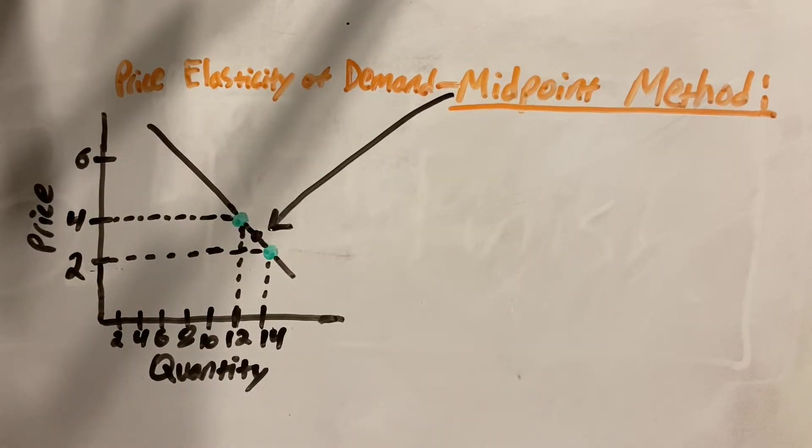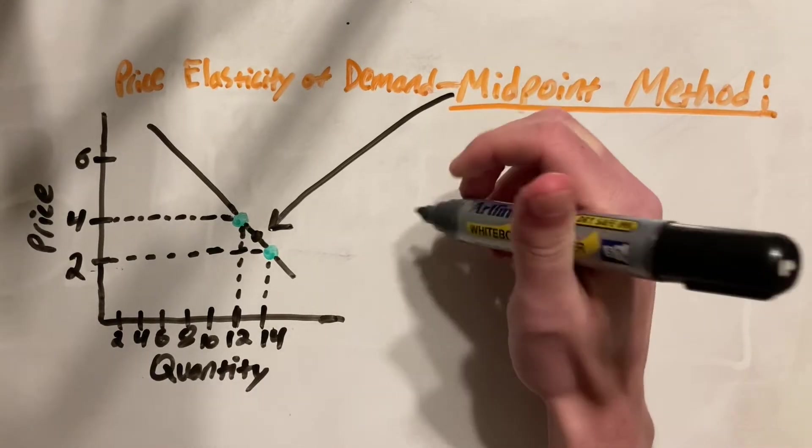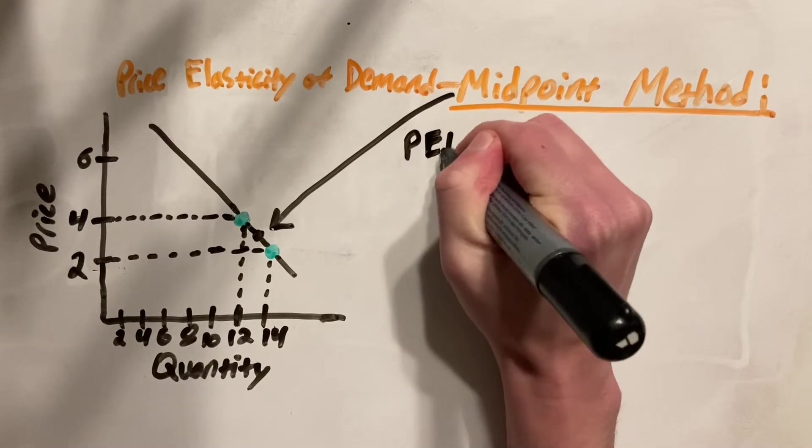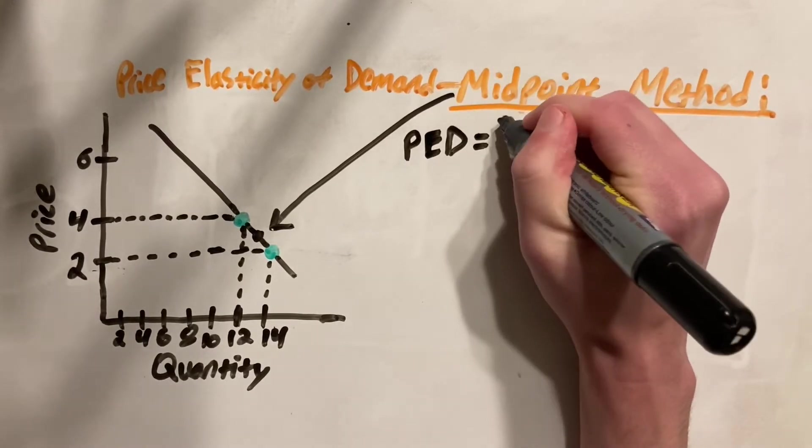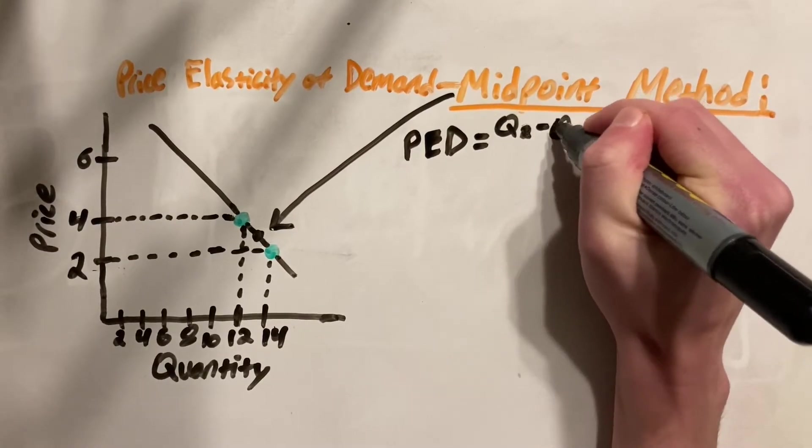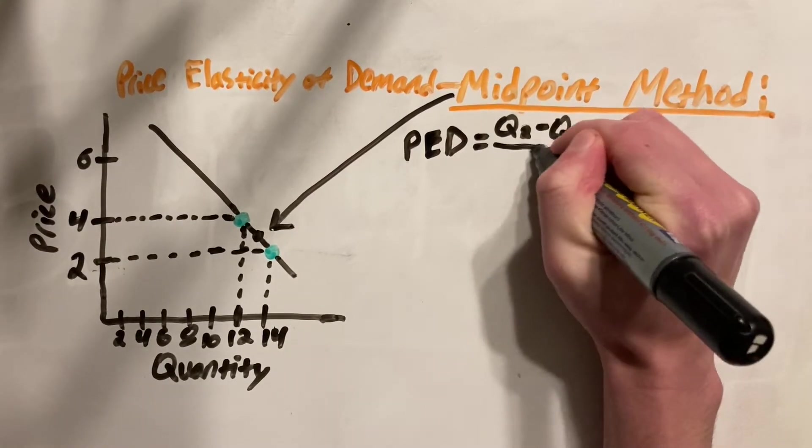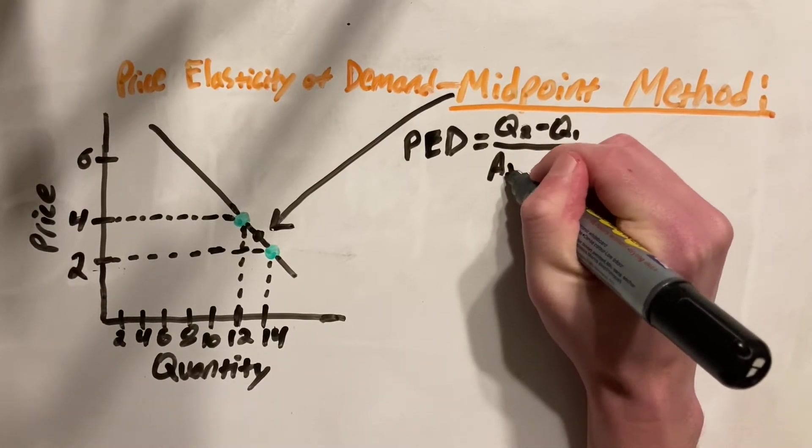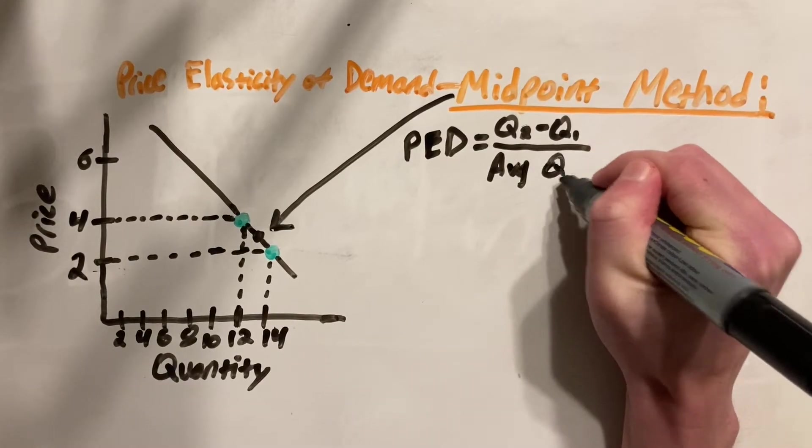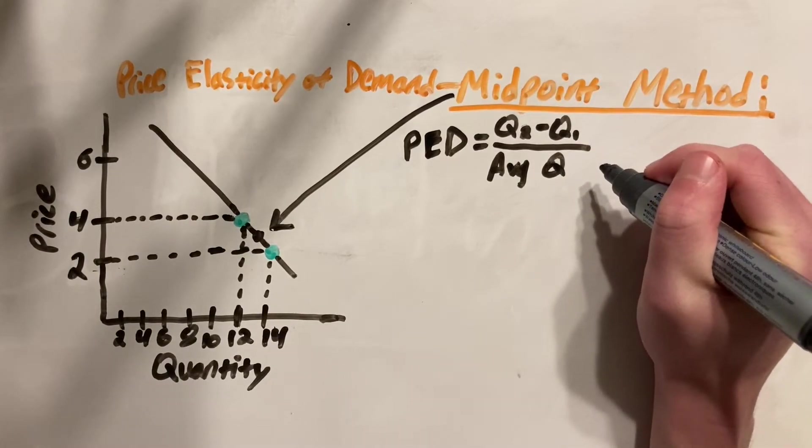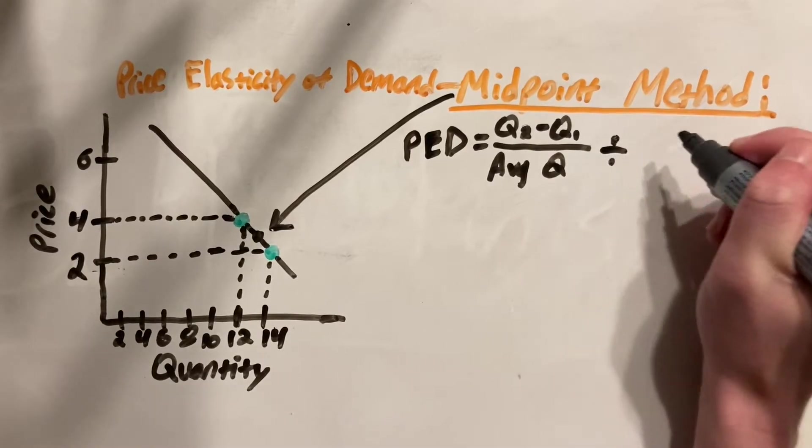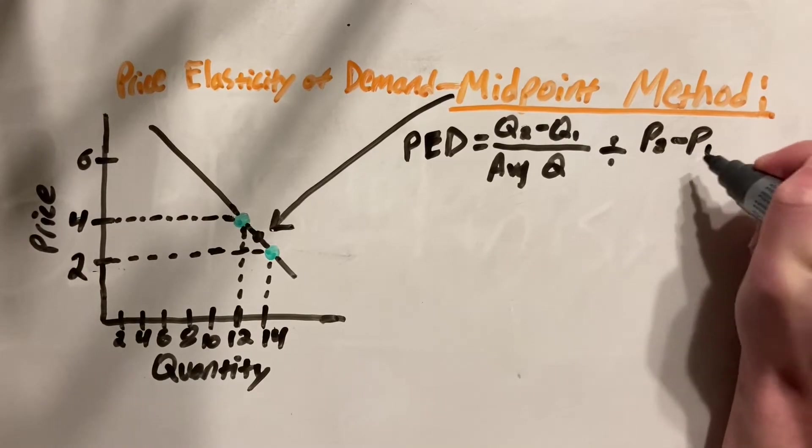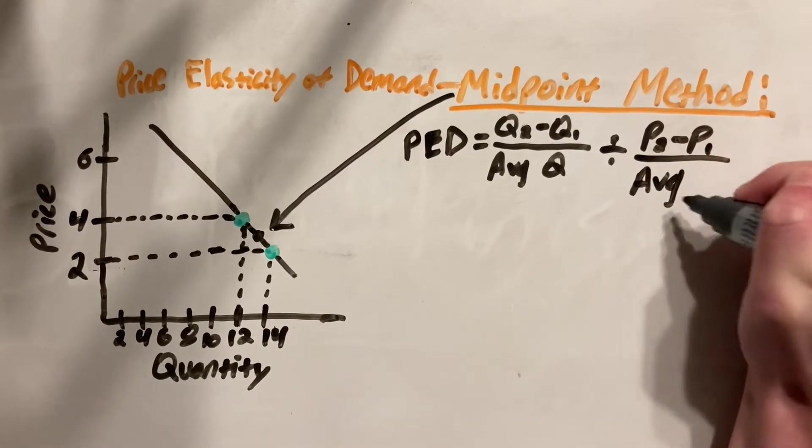The way we're going to do this is through a formula. The main thing you'll want to know is this formula, as this will be key to solving almost every problem involving the price elasticity of demand. And that formula is PED, which stands for price elasticity of demand, is equal to Q2 minus Q1, all divided by the average of Q, where Q stands for quantity on our demand supply graph. And then we have all of that divided by P2 minus P1 over average P, where P stands for price.